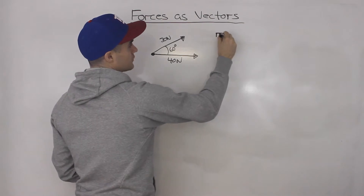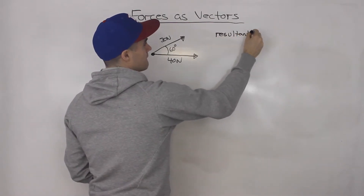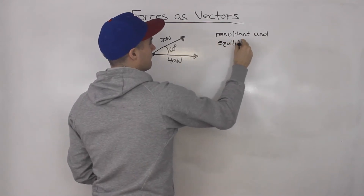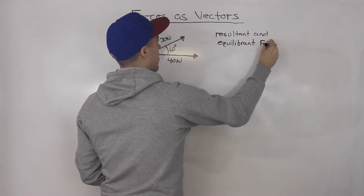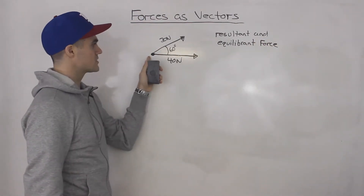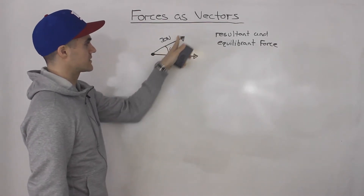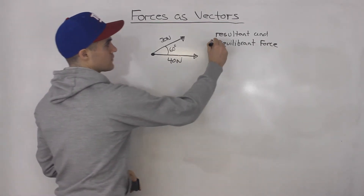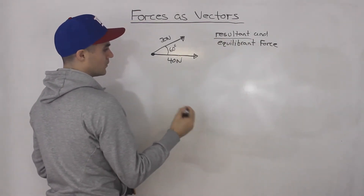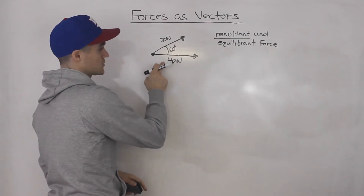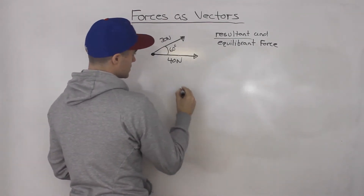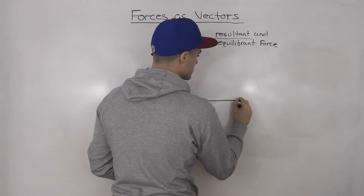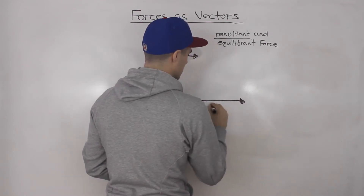Let's find what the resultant and equilibrium force is going to be. So 40 newtons is acting on this object in one direction, 30 newtons in another direction, with 60 degrees between the two forces. Let's start off with finding the resultant by adding these two vectors. We'll start with the 40 newton vector going this way.